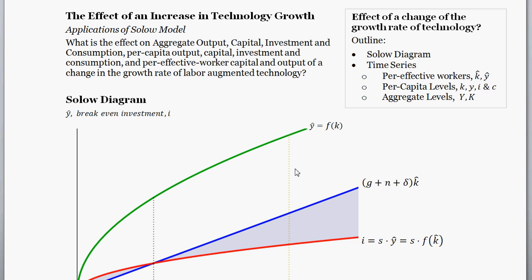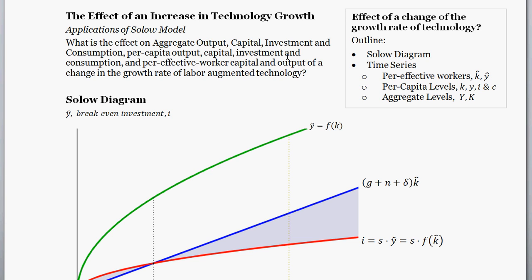The plan of attack is we're going to look at things through the SOLO diagram. We're going to see how a shift in technology growth affects things through the SOLO diagram, and then after that I'll draw a time series for the key variables given this higher level of technology growth. This is a video among many covering the SOLO model, so check out the video description if you want more help.